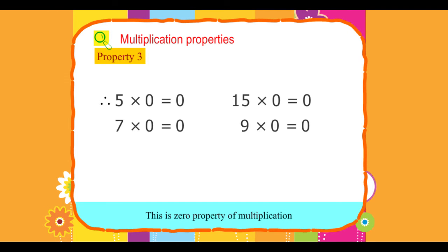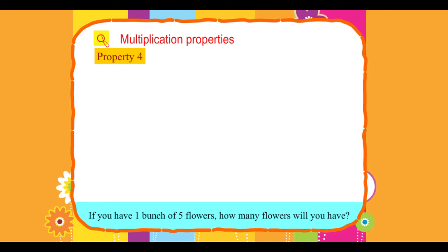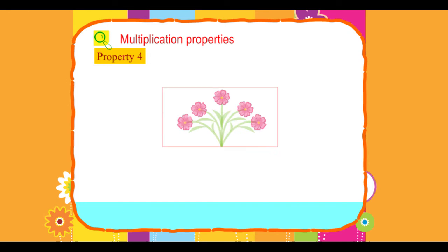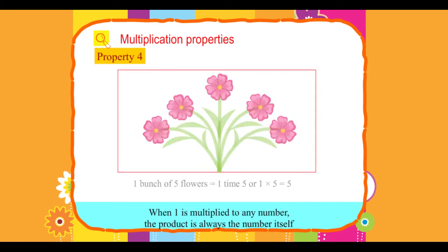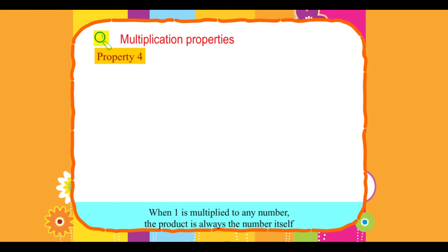Property 4. If you have 1 bunch of 5 flowers, how many flowers will you have? 1 bunch of 5 flowers equals 1 times 5, which equals 5. When 1 is multiplied by any number, the product is always the number itself.